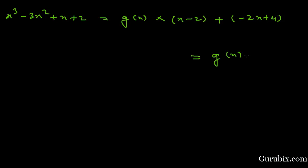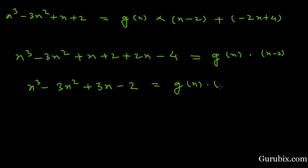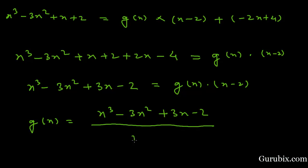We shall keep g(x) into x minus 2 on the right-hand side and take minus 2x plus 4 to the left-hand side. Then it becomes x cubed minus 3x squared plus x plus 2, and minus 2x becomes plus 2x and plus 4 becomes minus 4. Finally, x cubed minus 3x squared plus 3x minus 2 equals g(x) into x minus 2. So g(x) equals x cubed minus 3x squared plus 3x minus 2 over x minus 2.